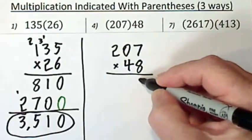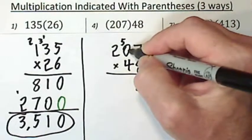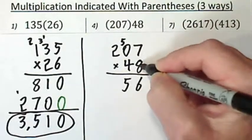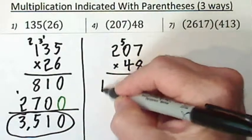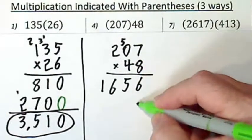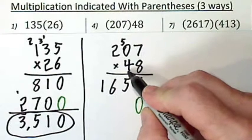So eight times seven, fifty-six. Carry the five. Eight times zero is zero, plus five is five. Two times eight is sixteen. Before I start multiplying by a four, I have to put my zero in, since that's in the tens place.